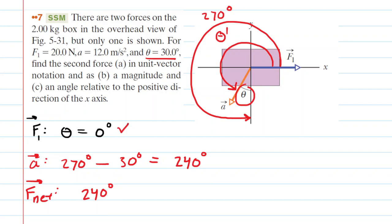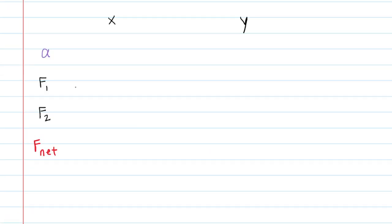Now that we've established these three angles, let's begin to summarize some of the data in the following table. In this table, we have lined up the acceleration, F1, F2, and the net force, and we're going to break them into their x and y components.